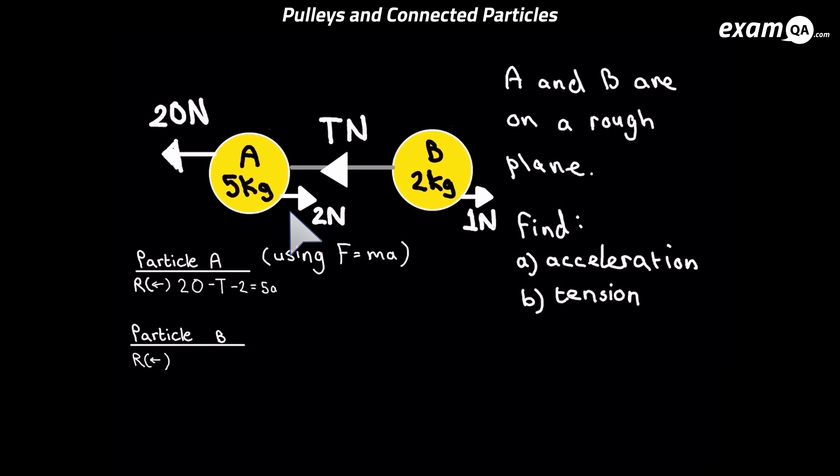So let's fill in F equals MA again. This one's really straightforward. It's just T minus 1 equals 2A. The 2A is of course M times A, and the mass of B is 2. Now you might ask, why am I resolving to the left as positive? You could do either direction. I chose the left because it's moving to the left and it'll give my acceleration as positive.